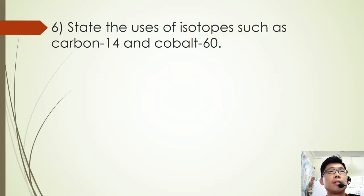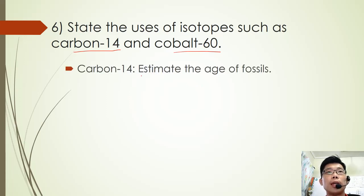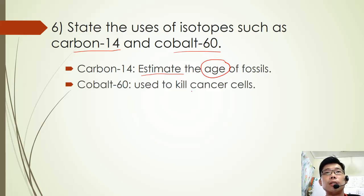Number six: state the uses of isotopes such as carbon-14 and cobalt-60. These two isotopes are very popular in SPM. So carbon-14 is used to estimate the age of fossils, and cobalt-60 is used to kill cancer cells.